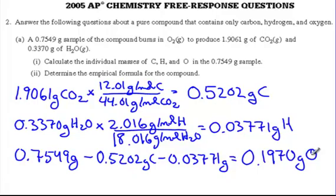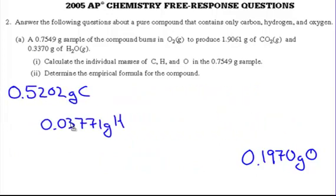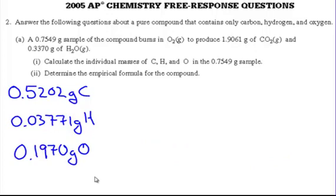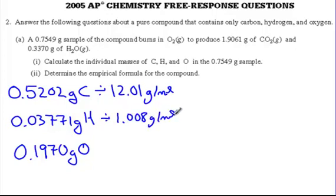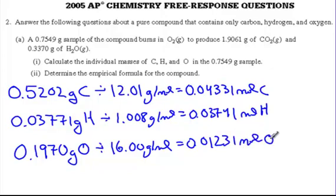Now part 2 says determine the empirical formula for the compound. So what I'm going to start with here is my 0.5202 grams of carbon, my 0.03771 grams of hydrogen and my 0.01970 grams of oxygen. And in order to find the empirical formula, I have to divide by the individual molar masses, because we're trying to find a ratio of moles. And if you see, I will do that for each element. And I end up getting 0.04331 moles of carbon, 0.03741 moles of hydrogen and 0.01231 moles of oxygen. That's worth one point.